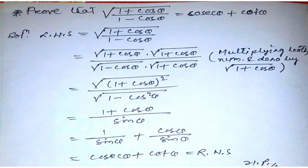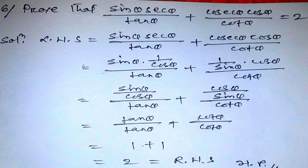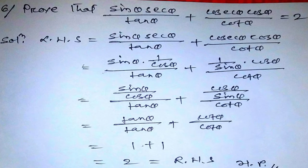Problem number two: prove that (sinθ · secθ)/tanθ + (cosθ · cosecθ)/cotθ = 2. Solution: Left hand side equals (sinθ · secθ)/tanθ + (cosθ · cosecθ)/cotθ.